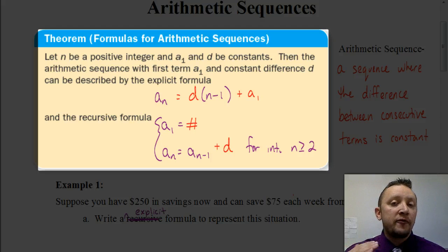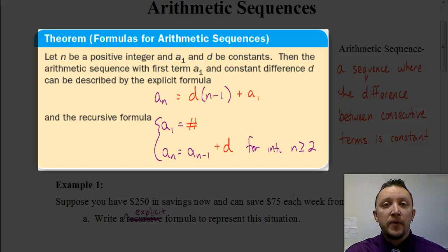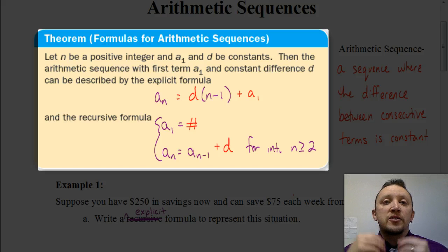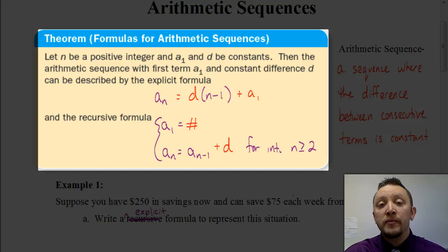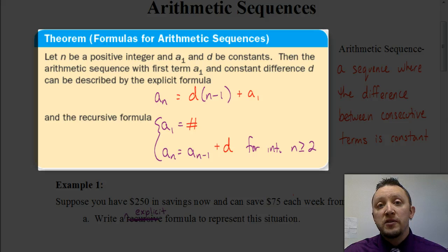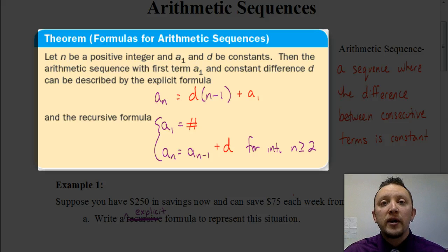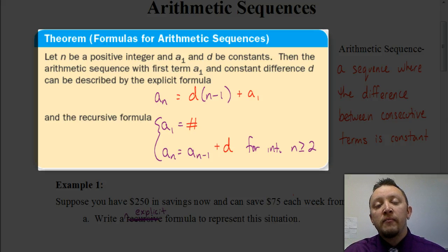Let's talk about the difference between a recursive and an explicit formula. An explicit formula gets us directly to our answer. So if I want to figure out what the 100th term or the 50th term is for a sequence, I would want to use the explicit formula because I could just put 50 or 100 in for n and that would give me my value for that term.